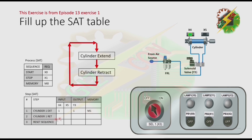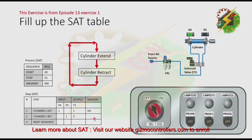Next, cylinder will retract. What is the requirement for the cylinder to retract? The cylinder must reach the fully extended position. That's why I put 1 here at x5. We have 0 at y3 because when the cylinder reaches the fully extended position and energizes x5, the cylinder will retract. We need to put a memory — I choose m2.